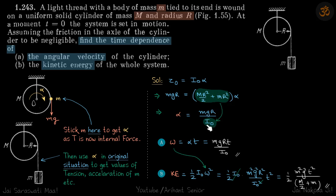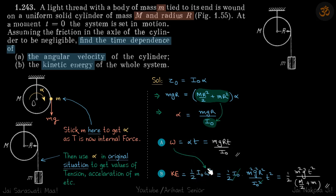Simplifying, alpha equals mg·r divided by I₀, where I₀ is the total moment of inertia about O. Since alpha is constant, omega equals alpha·t. For the kinetic energy of the whole system, KE equals half I₀ omega squared. Substituting omega, I₀ cancels and we get our final answer.